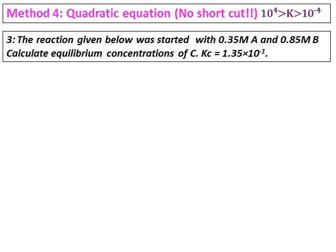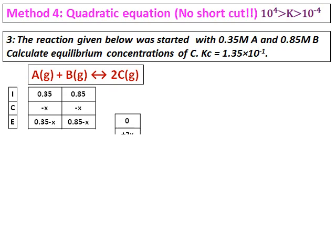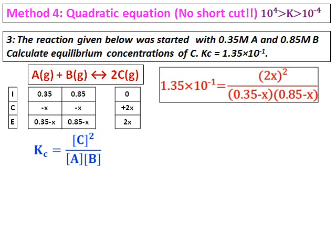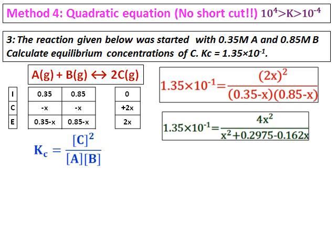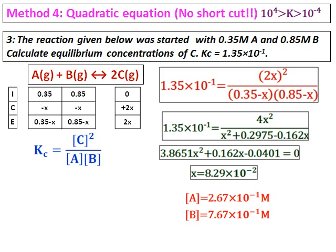This is method 4, using the quadratic equation. There is no shortcut. It is applied when the value of K is between 10 to the power of negative 4 and 10 to the power of 4. Set up the ICE table, substitute into the equilibrium expression, and use the quadratic equation to solve for x. The value of x comes out as 8.29 times 10 to the power of negative 2. The concentration of C will be twice this value, the concentration of A will be 0.35 minus x, and the concentration of B will be 0.85 minus x.